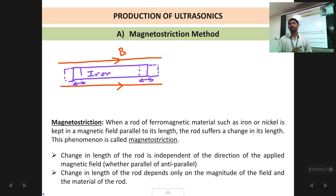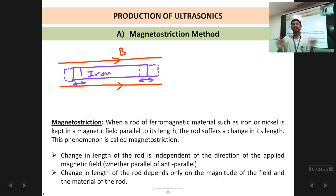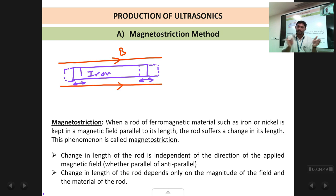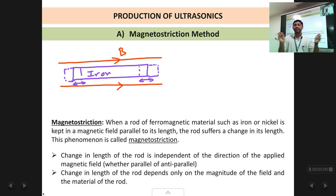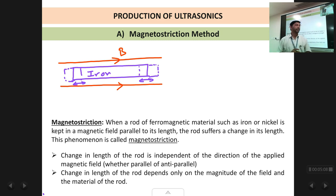The change in length depends upon the material of the rod and the strength of the magnetic field applied. A stronger magnetic field produces a larger change in length. For example, iron increases in length when placed in a magnetic field — the larger the field, the greater the increase. Nickel, on the other hand, decreases in length when placed in a magnetic field, and a larger field produces a greater decrease.